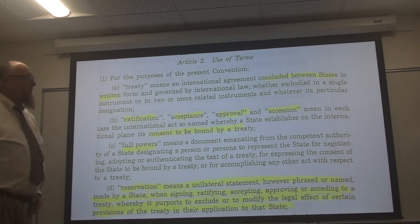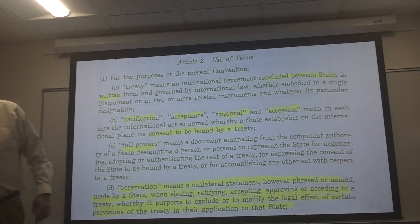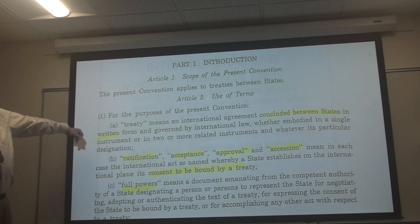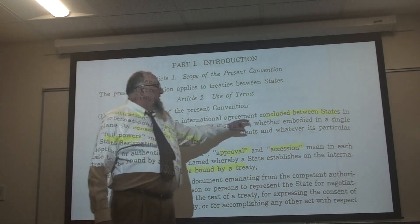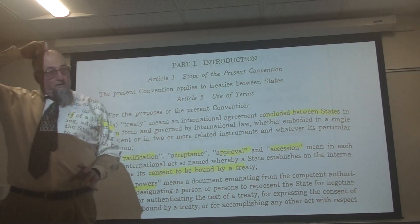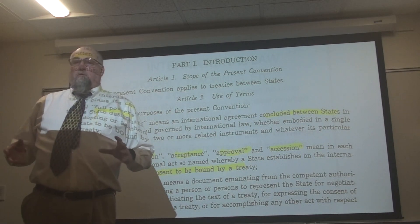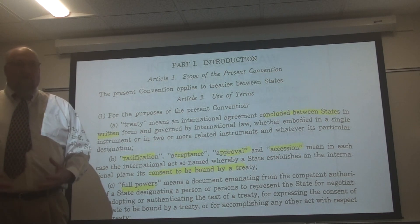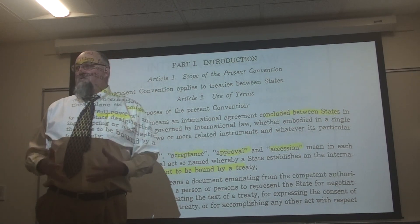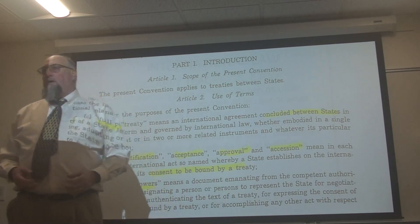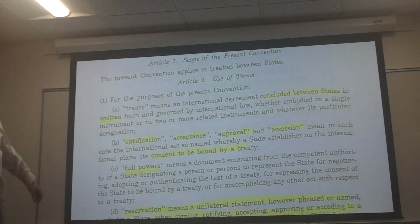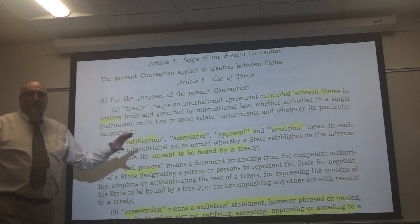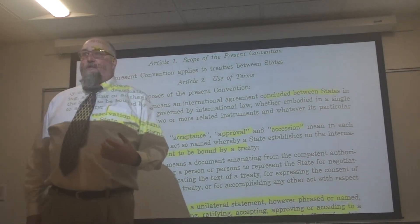Under Article 2, Section 1(a), a treaty means an international agreement concluded between states — not sub-units — so it must involve sovereign states like the US federal government. Additionally, the Vienna Convention requires that a treaty be in written form, not a verbal agreement.